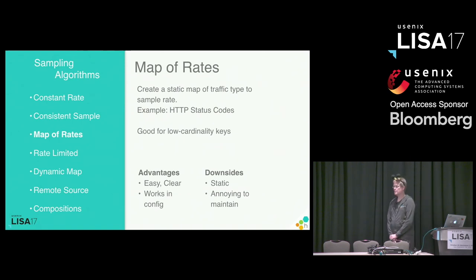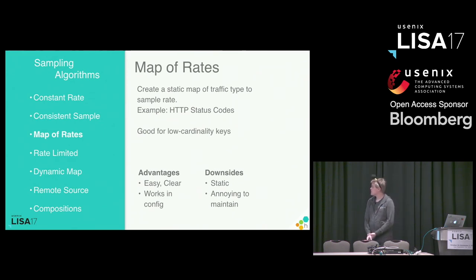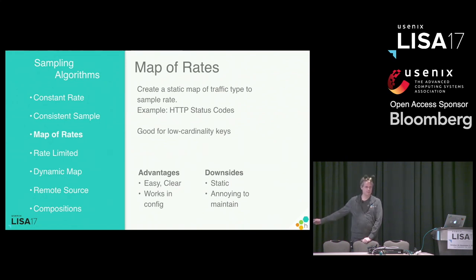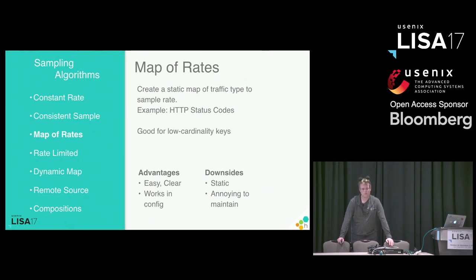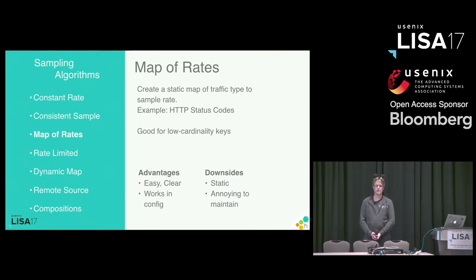The next I want to discuss is taking the static sample rate just a little bit further. We're going to use a static sample rate, but configure our system to measure different traffic at different rates. An excellent example is HTTP status codes. I want to sample all successful requests at a ratio of 1 to 1,000, and any errors that come through, I want to see all of them. So I examine the HTTP status code on its way out of the web server — if it's in the 200 range, sample at 1 to 1,000; if the code is in the 500 range, send it no matter what. Without adding too much complexity, this is something easily configured in an Nginx config file, a Varnish config file, or in Logstash.